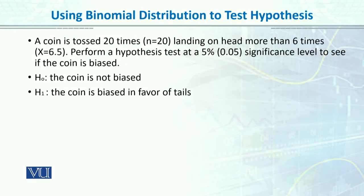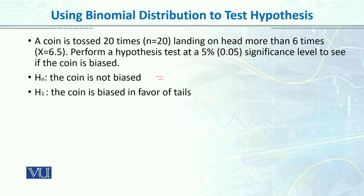Let's do an example. A coin is tossed 20 times, so n is 20, and it landed on heads more than 6 times. Perform a hypothesis test at alpha 0.05 significance level to see if the coin is biased. The null hypothesis is always the hypothesis of no difference — a neutral statement that the coin is not biased, the coin is fair. Against it, we form the research hypothesis: the coin is biased in favor of tails.